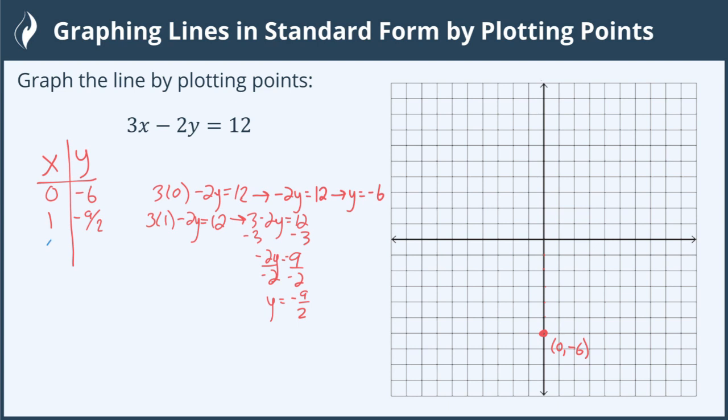How about a 6? Let's try 6. So let's plug in a 6 for x. So 3 times 6 minus 2y equals 12. 18 minus 2y equals 12. Let's subtract 18 from both sides. I get negative 2y equals negative 6. Divide both sides by negative 2. I get y equals a positive 3. That looks like another good point, 6 comma 3.